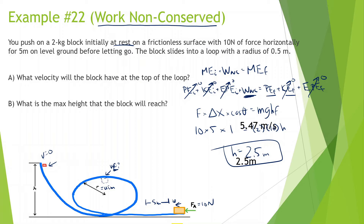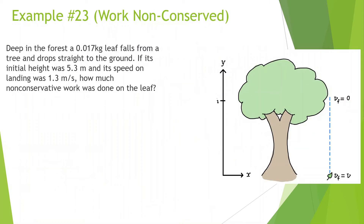There are many ways of doing this one. You could have found the potential energy and kinetic energy at the top of the loop, made that the initial, and used that to find the max height as the final. However you did it is fine — this is just the way I did it. Let's go on to the next one.